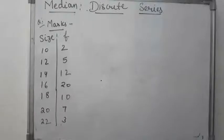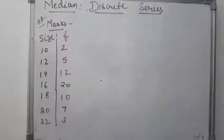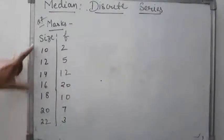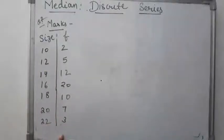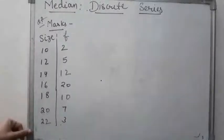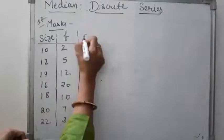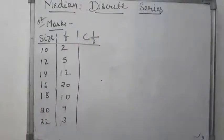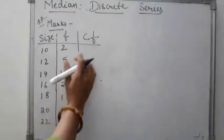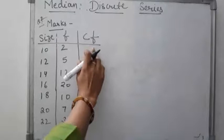The second kind of series is the discrete series. In this question, size of items and their frequencies are given. In discrete series, frequencies are given but class intervals are not. When we calculate the median, first we find the cumulative frequencies. The series is already in ascending order, so we convert frequency into cumulative frequency (CF).